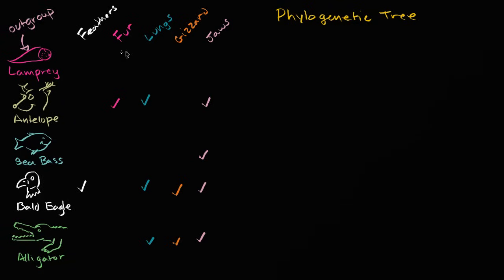The lamprey doesn't have any of these observable traits. Sometimes, if we're looking at genetic differences, it might have the largest number of genetic differences relative to everything else. And so it makes sense — the simplest hypothesis is that its common ancestor is most distant into the past with everything else.